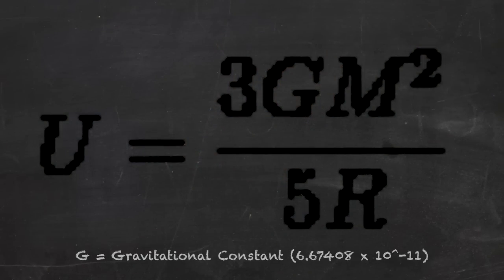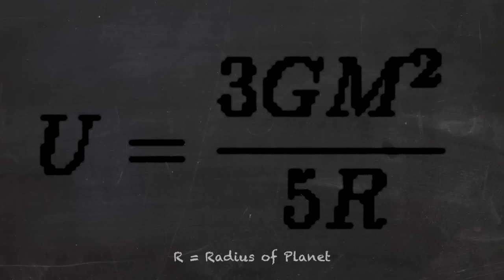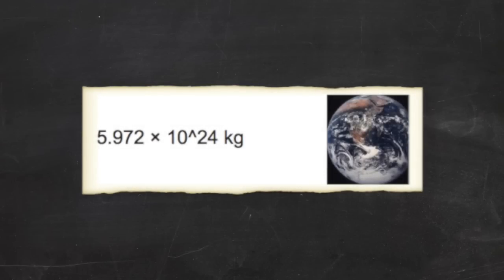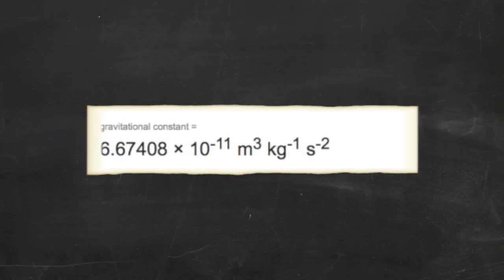G is the gravitational constant, just a number you always have to have when dealing with gravity. R is the radius of the planet, and M is the mass of the planet. Earth is this heavy, the gravitational constant is this, and the Earth's radius is displayed here.